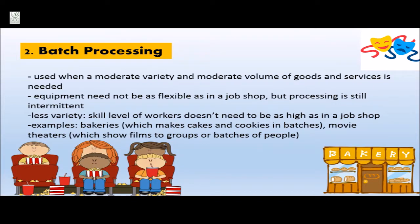Next is batch processing, which is used when a moderate variety and moderate volume of goods and services is needed. The equipment need not be as flexible as in a job shop, but processing is still intermittent. Because there is less variety in the jobs being processed, the skill level of workers doesn't need to be as high. Examples include bakeries which make cakes and cookies in batches, and movie theaters which show films to groups or batches of people.